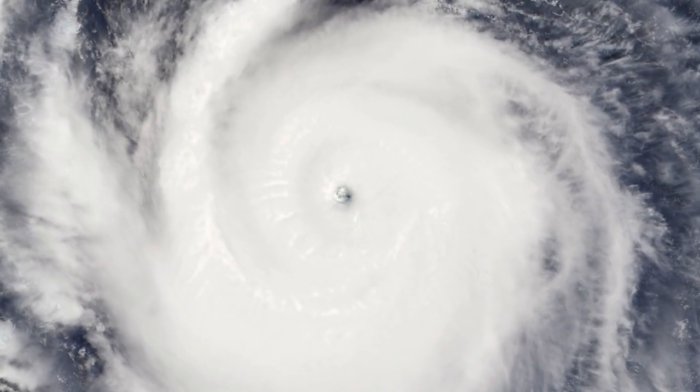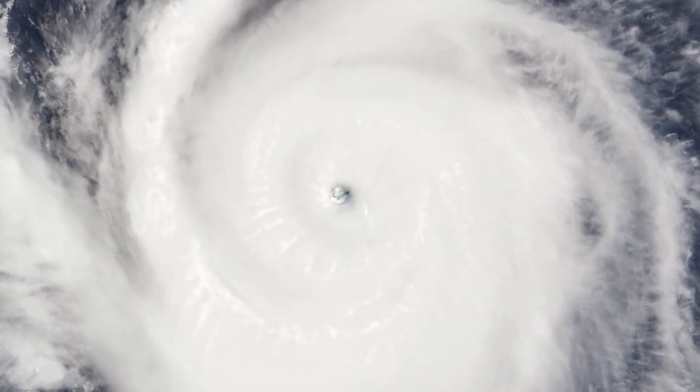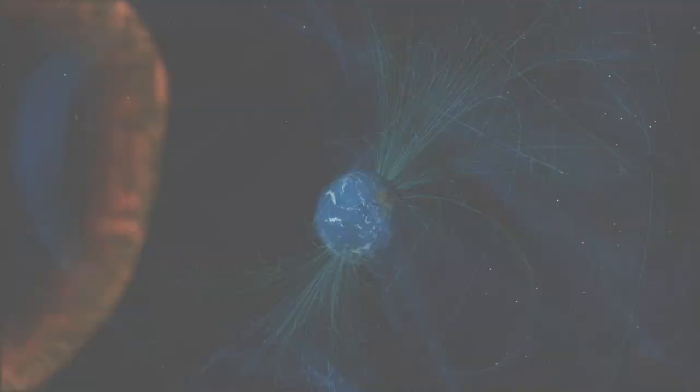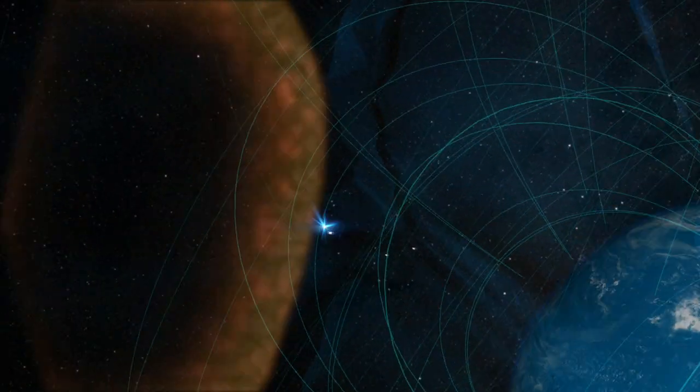Similar to how meteorologists fly into hurricanes, NASA has now flown a mission through the heart of a magnetic reconnection explosion. We call this mission MMS.